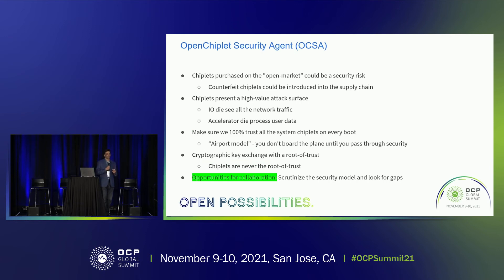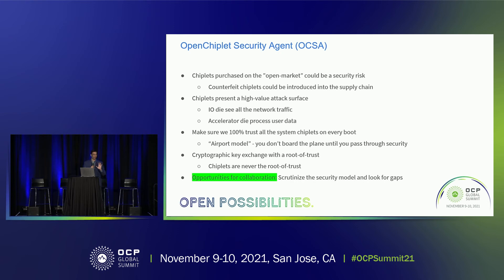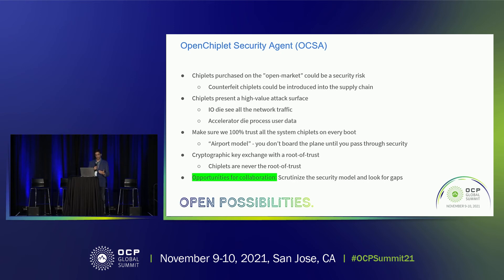The management layer also contains a security agent. A chiplet is a high-value attack surface — if I'm looking at a SerDes chiplet or an AI chiplet, all the data will go through that chiplet, so we cannot afford bad actors. Our thought is to build a security agent which ensures 100% trust on all chiplets at boot-up time. The chiplets will never be the root of trust, but there will be key exchange to enable that. We hope the community scrutinizes our security model and looks for gaps to make it more robust.